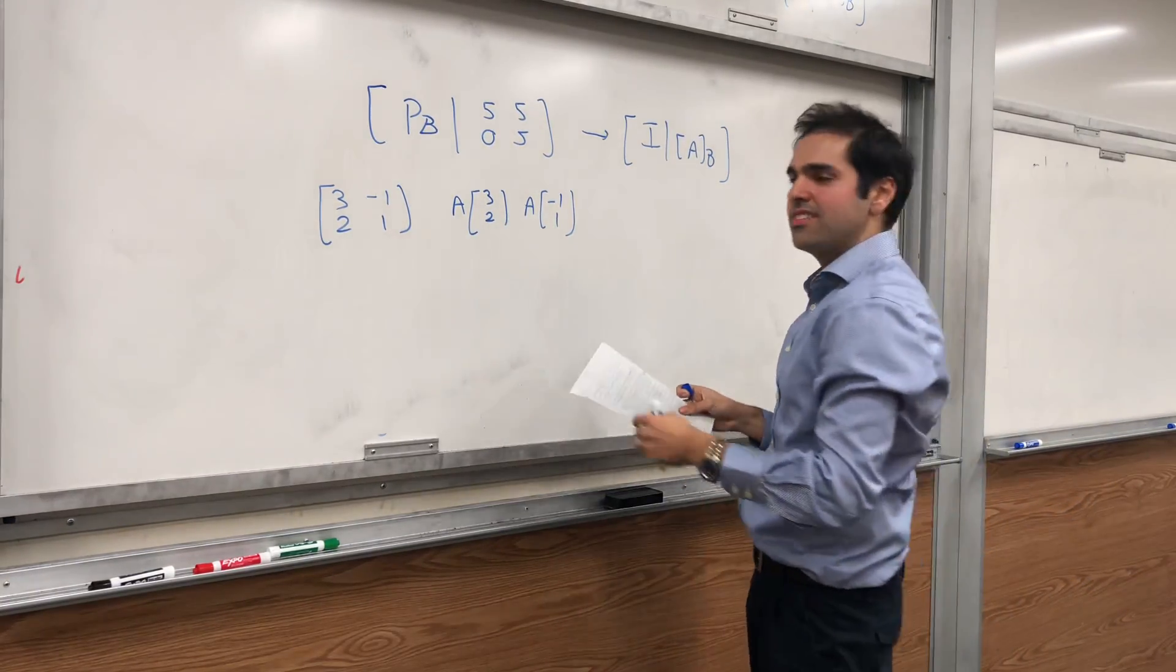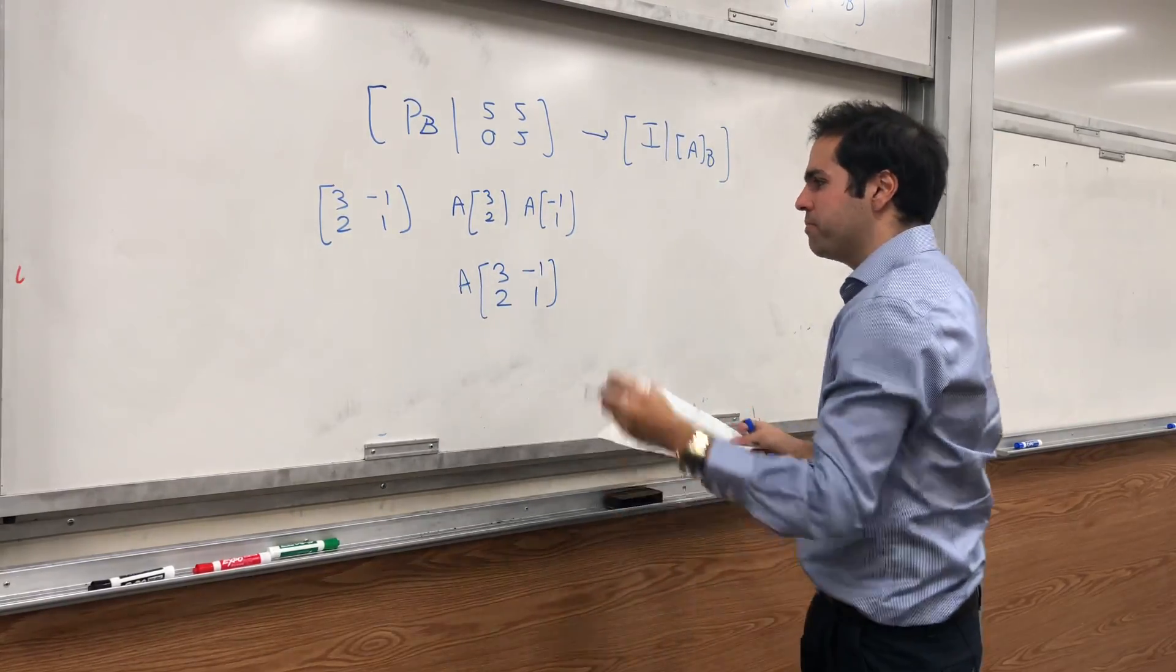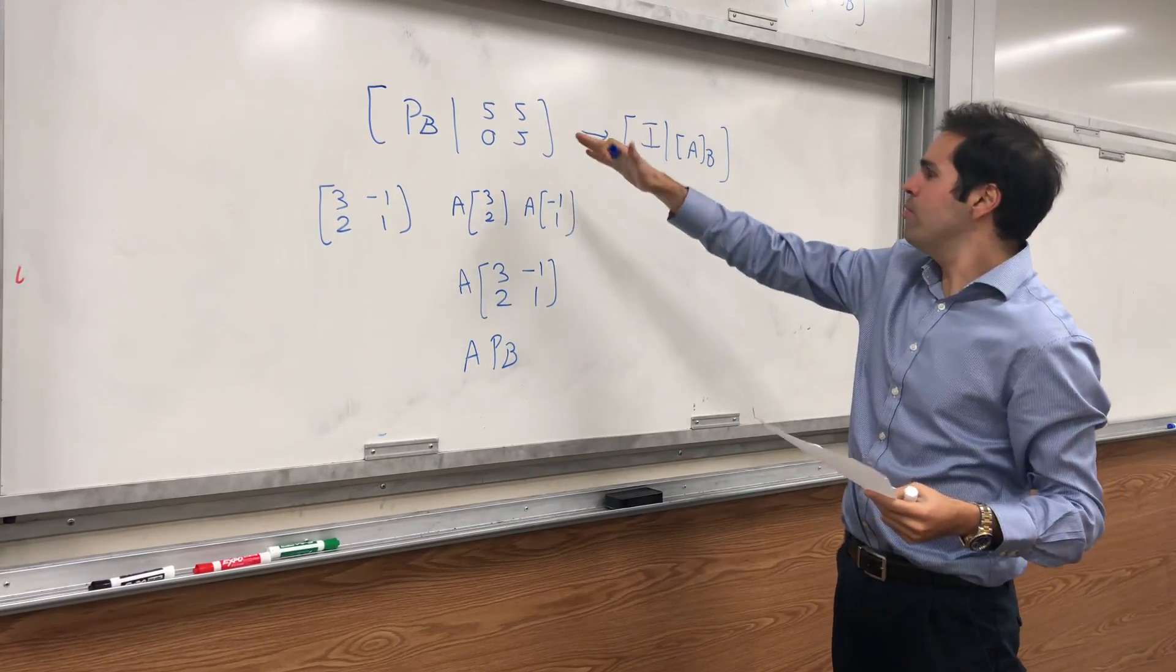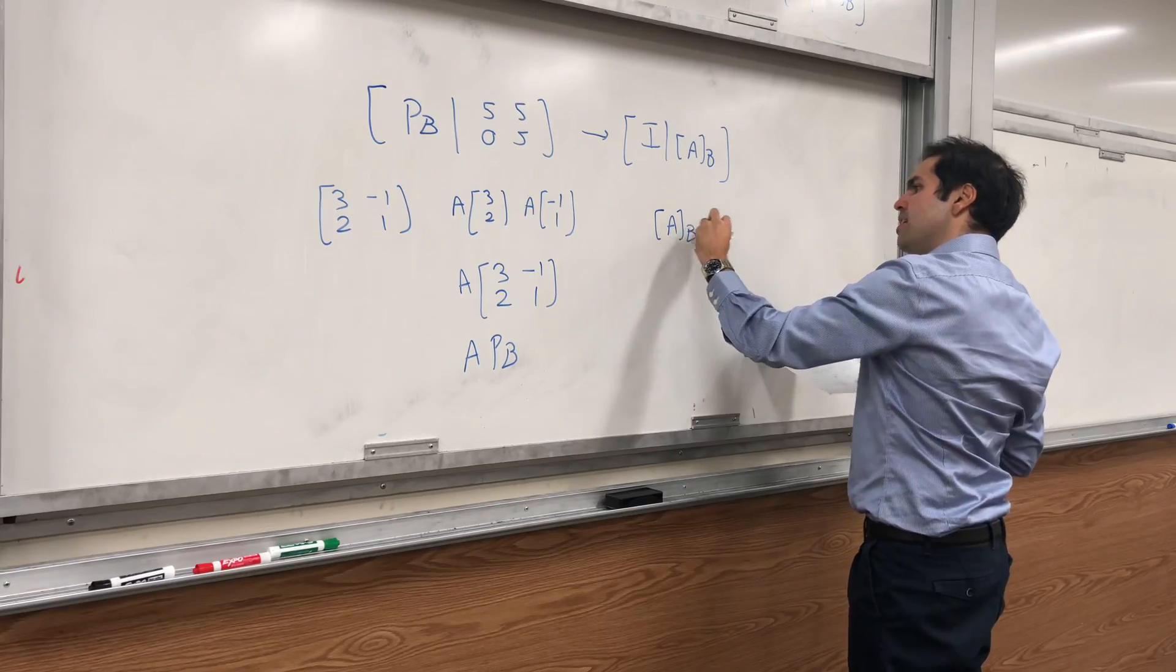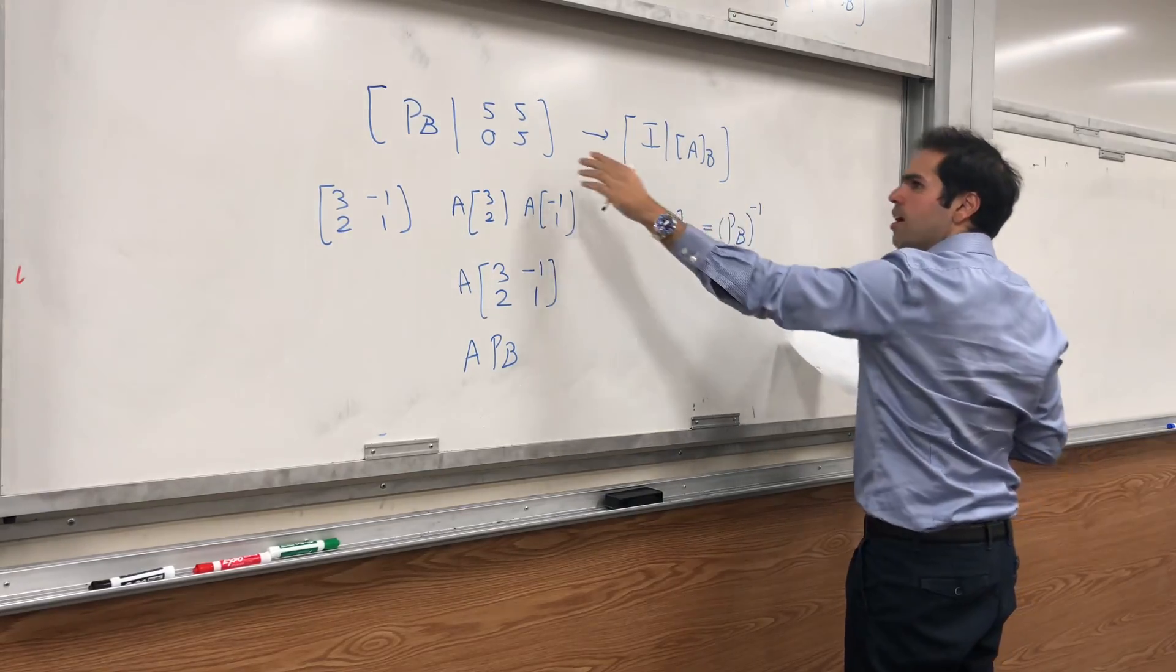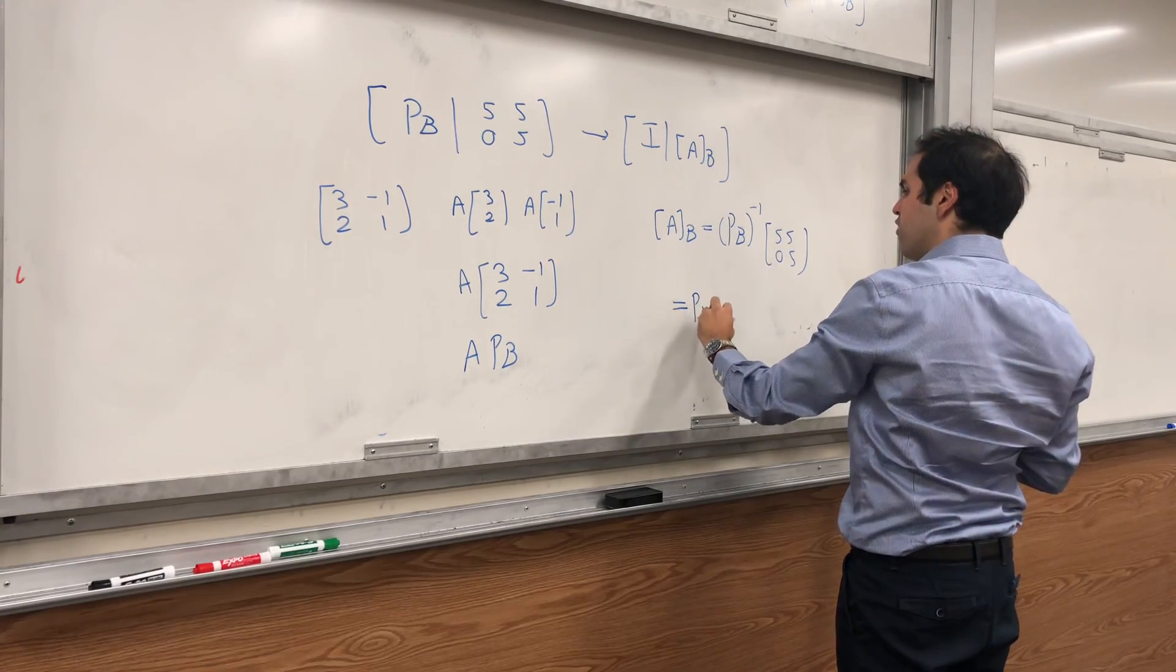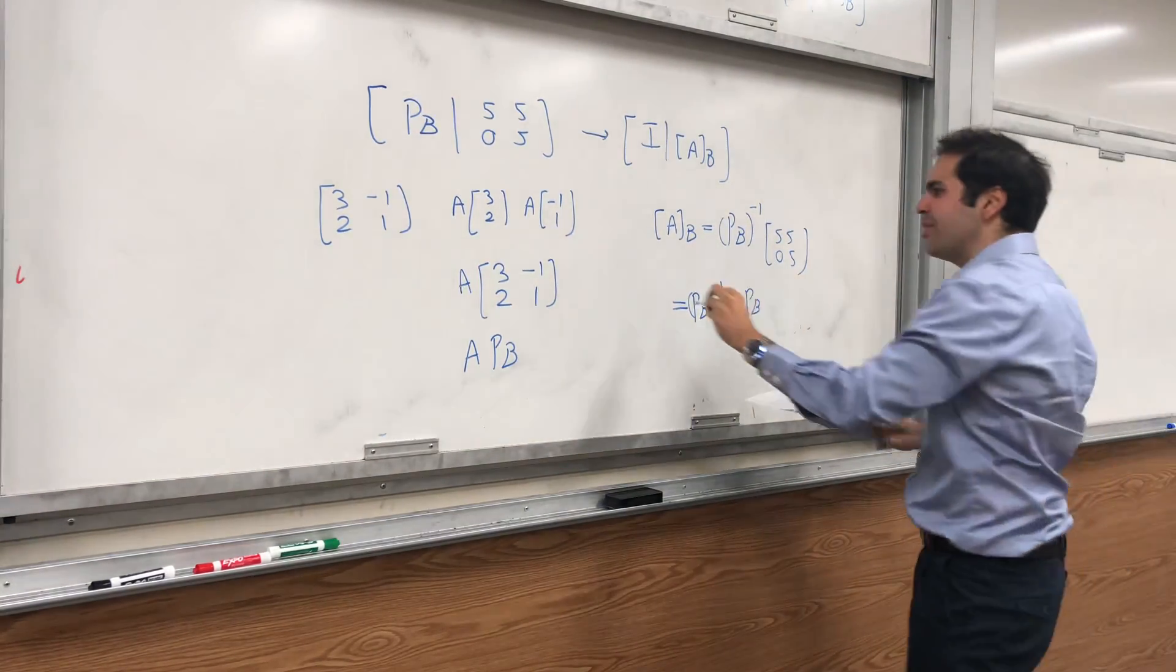Because this is precisely the matrix P_B and what did we do? Well really, we just tried to invert it. So really, A_B is the result of inverting P_B applied to this matrix (5, 5; 0, 5), which was A of P_B. So this is really cool. To find the B-matrix of A, we did something similar to diagonalization. This is called conjugation by P_B.